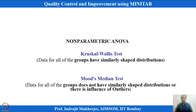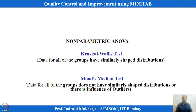When everything fails — normality, heteroscedasticity — there is an alternative known as the Kruskal-Wallis test. Although we cannot be fully assured about this test the way we can with classical ANOVA or Welch test, it can be used as an alternative to one-way ANOVA when groups have similar distributions.